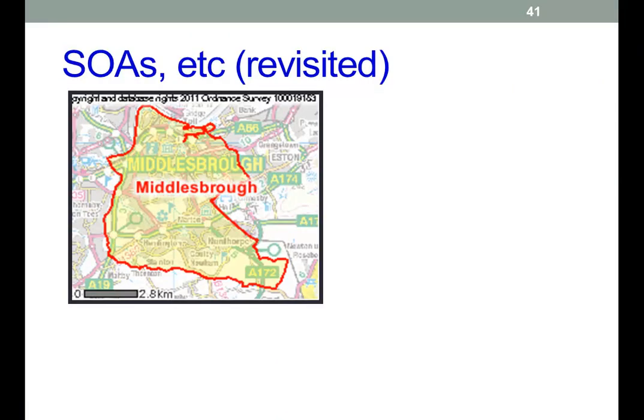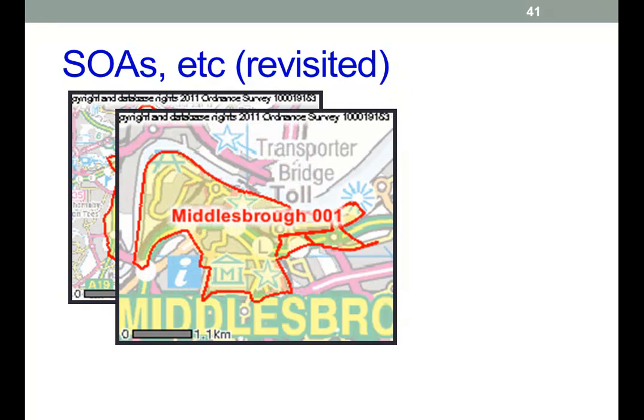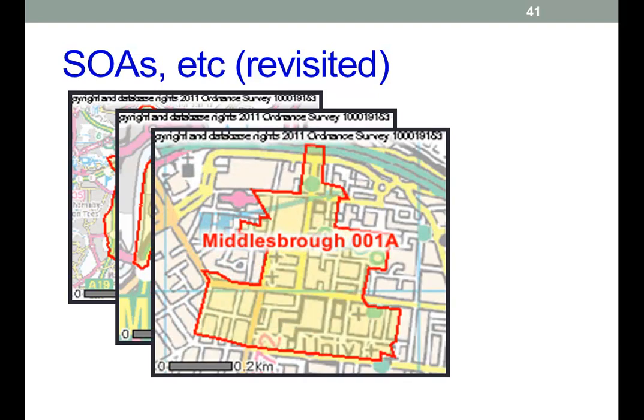There are two layers of output areas. The middle layer has 7,193 in this country with an average population of about 7,200 — compared to previous measures, this is a consistent average population. There are 34,000 lower-layer super output areas, built from the 2001 census data, with an average population of about 1,500. Below that you go down to wards, where data isn't routinely published. I'm going to have to stop now because I'm running out of time.